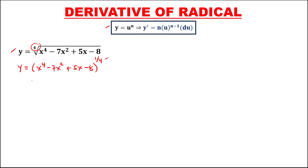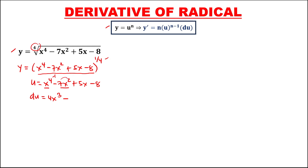From this equation, we have u equals the expression inside the parentheses: x to the power 4 minus 7x squared plus 5x minus 8. Then du, the derivative of u: the derivative of x to the power 4 is 4x to the power 3, minus the derivative of 7x squared — multiply 7 and 2, that's 14x — then plus the derivative of 5x, which is 5. The derivative of a constant is 0. So du equals 4x to the power 3 minus 14x plus 5.